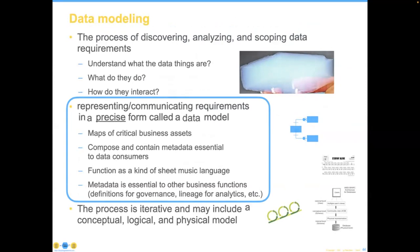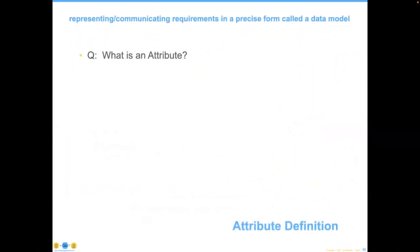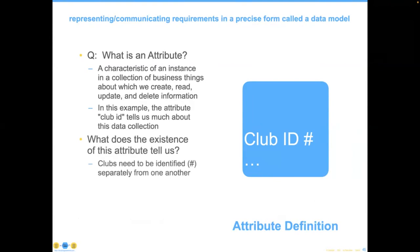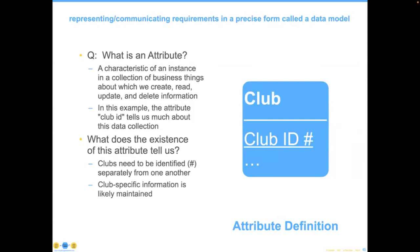Looking at things precisely is key. What is an attribute? It's a characteristic of an instance in a collection of business things about which we create, read, and update information. For example, if I give you the attribute 'club ID,' that tells us: clubs need to be identified separately from each other with unique IDs; the pound sign indicates a primary key; the rest of the information in that entity is likely to be about clubs; and some concept exists above the club level — there are probably organizations. That's just from one attribute.